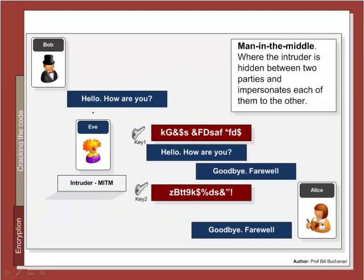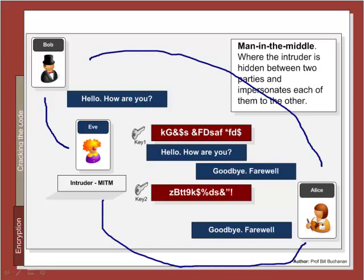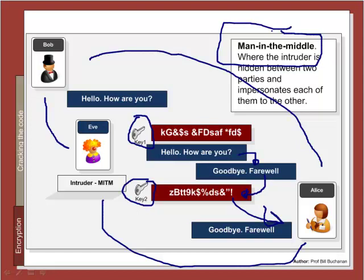Another method is the man-in-the-middle attack — or Eve in the middle — where Eve has placed herself between the communications. Bob thinks he is communicating directly with Alice but is actually communicating with Eve, who is then communicating with Alice. There are two communication channels: one between Bob and Eve, and one between Eve and Alice. Eve generates one key for Bob's communications and another for Alice's. The encryption happens, Eve decrypts it, reads the message, can modify it, re-encrypts it with the new key, and sends it to Alice. The man-in-the-middle attack is one of the most difficult to overcome.